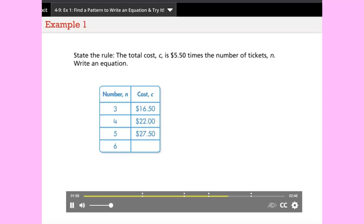State the rule: the total cost c is five dollars and fifty cents times the number of tickets n. Write an equation.